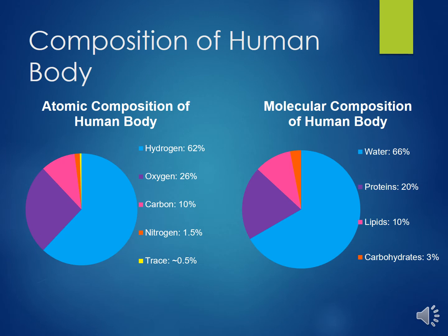The atomic composition of humans can be seen in the pie chart on the left. Hydrogen, oxygen, carbon, and nitrogen are responsible for 99.5% of the total composition. Other atoms are found in small amounts, completing the remaining 0.5% atomic composition. Please note this is atomic composition, not mass composition, which would have different percentages.